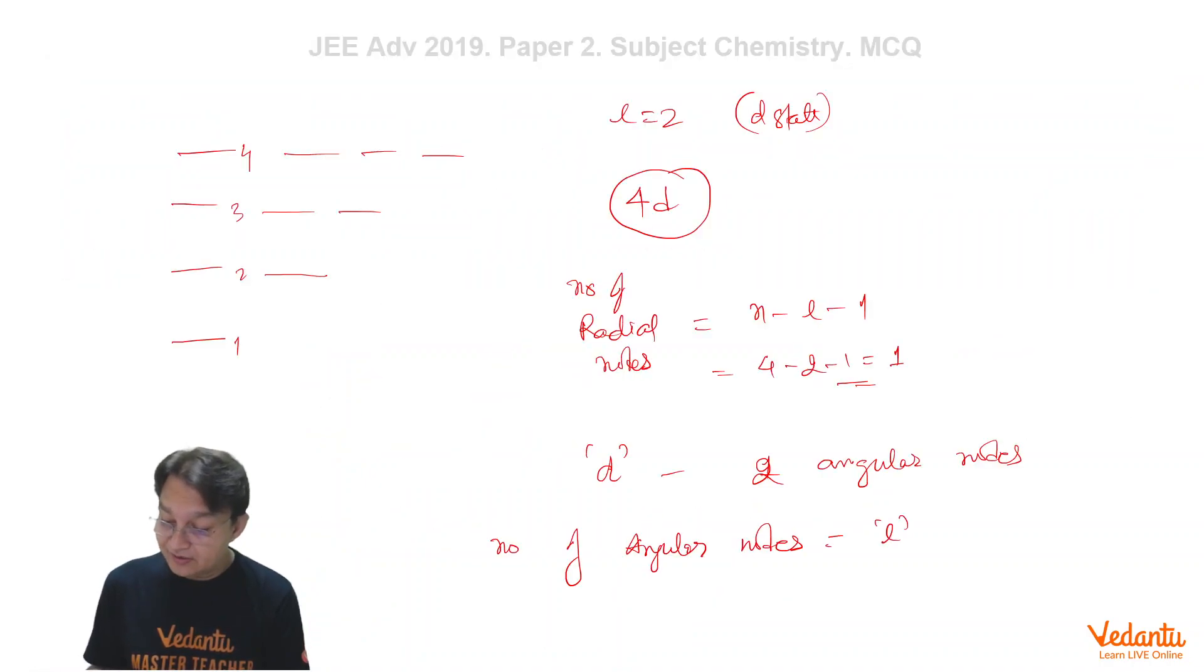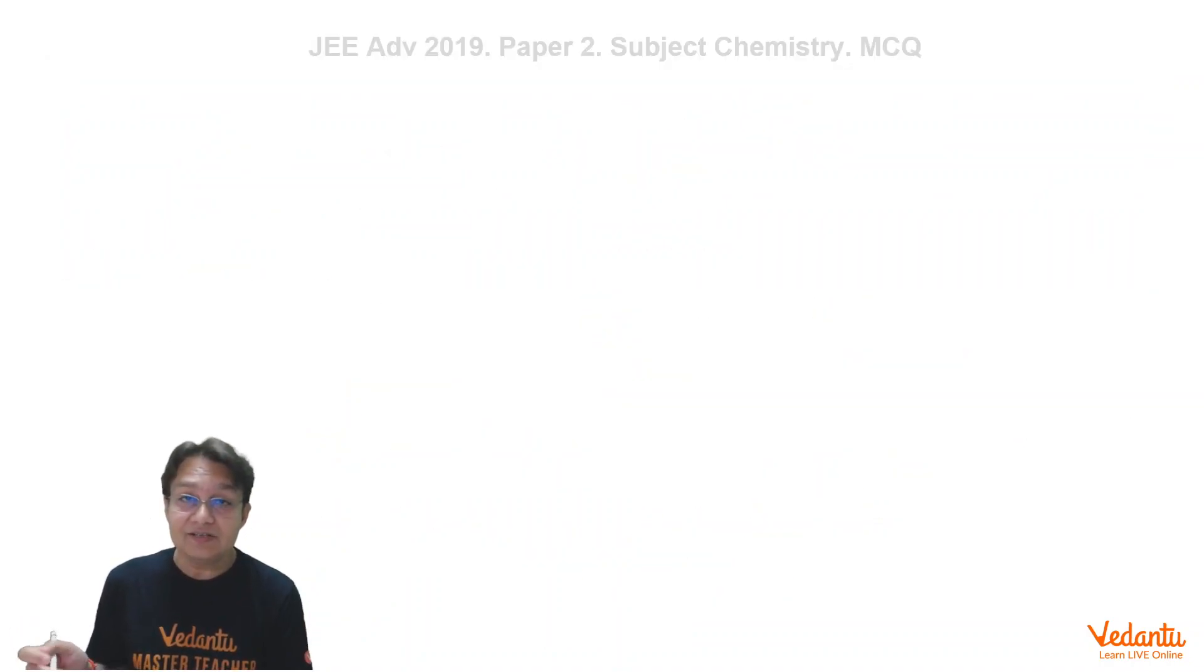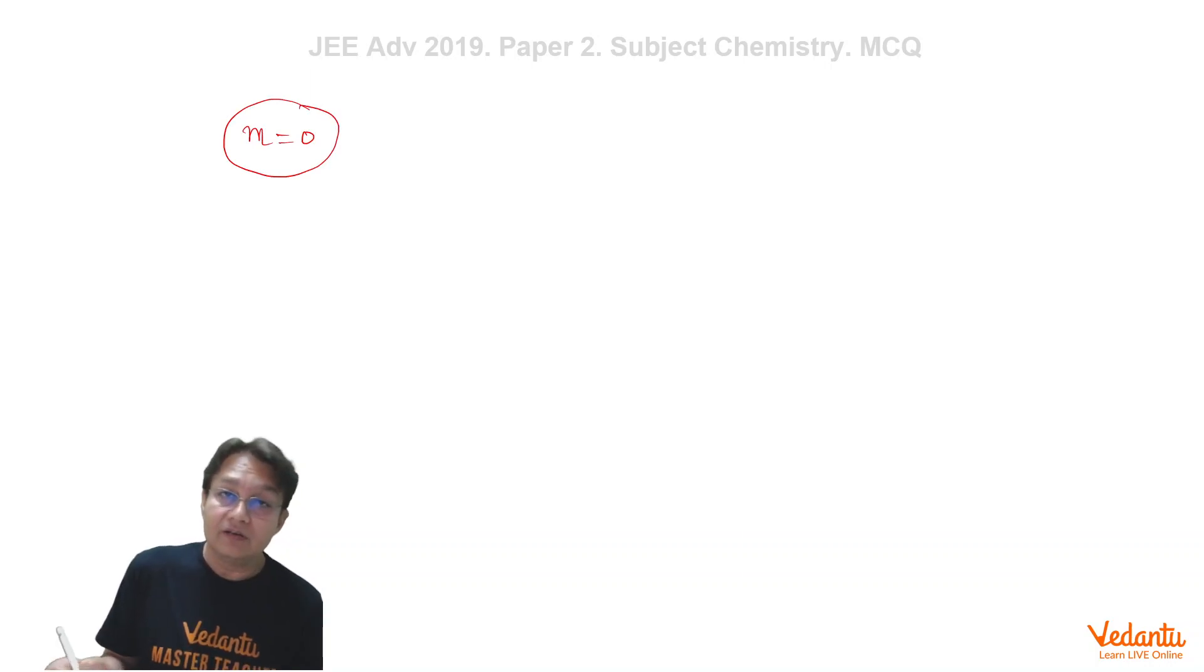And if you're interested in what are these two angular nodes, since it has been given that M is equals to 0, whenever M is equals to 0, which means that wave function of the quantum state is independent of phi, independent of phi.